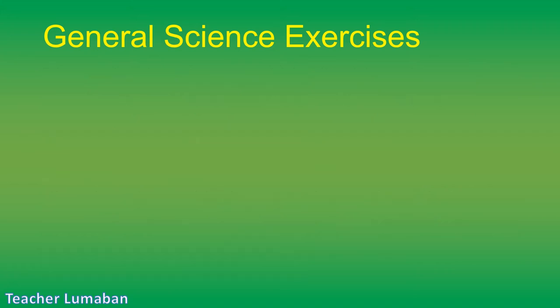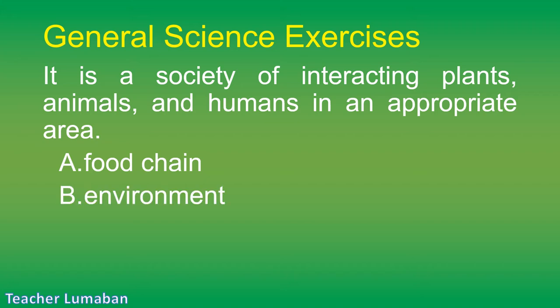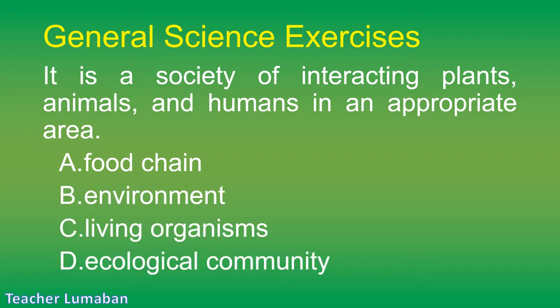What is a society of interacting plants, animals, and humans in an appropriate area? Letter A: food chain. Letter B: environment. Letter C: living organisms. Letter D: ecological community.